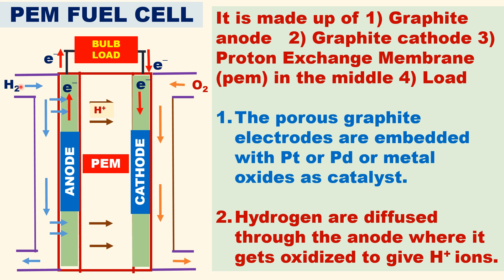Hydrogen gas is injected through the anode side, and oxygen gas is injected through the cathode side. The unused hydrogen gas is collected and reused, and similarly, the unused oxygen gas is collected and reused.